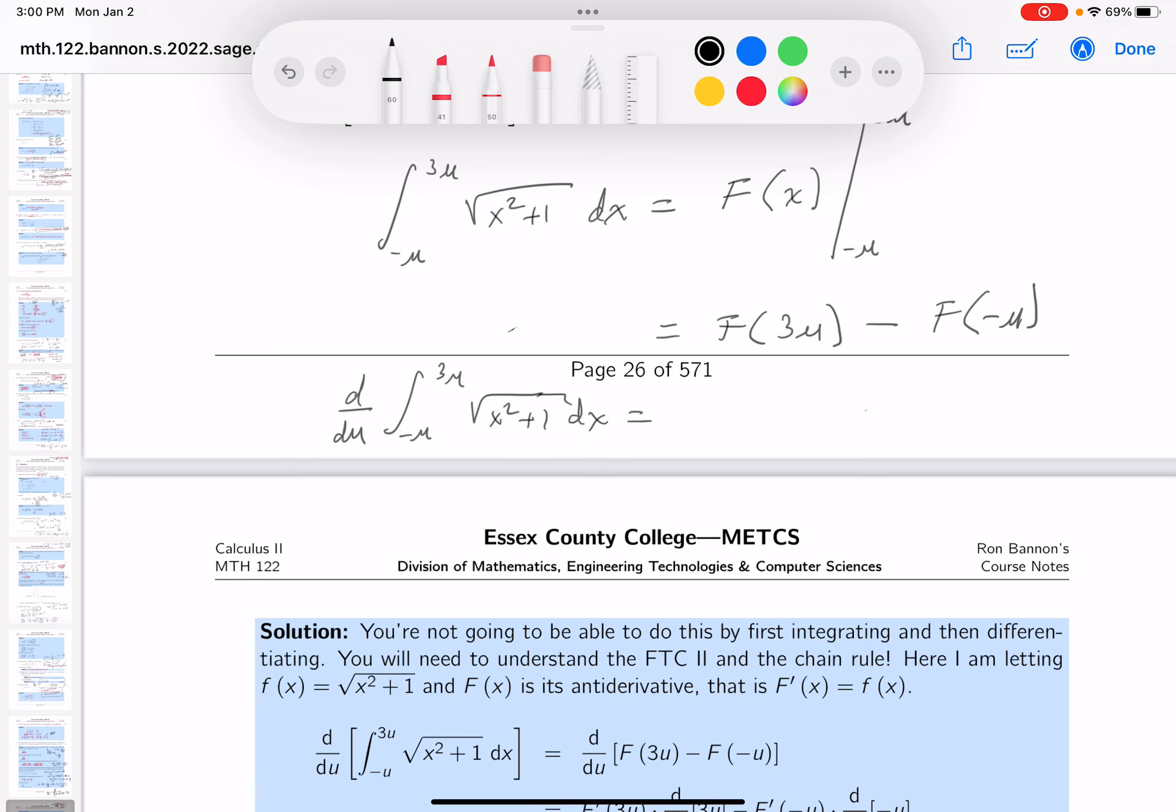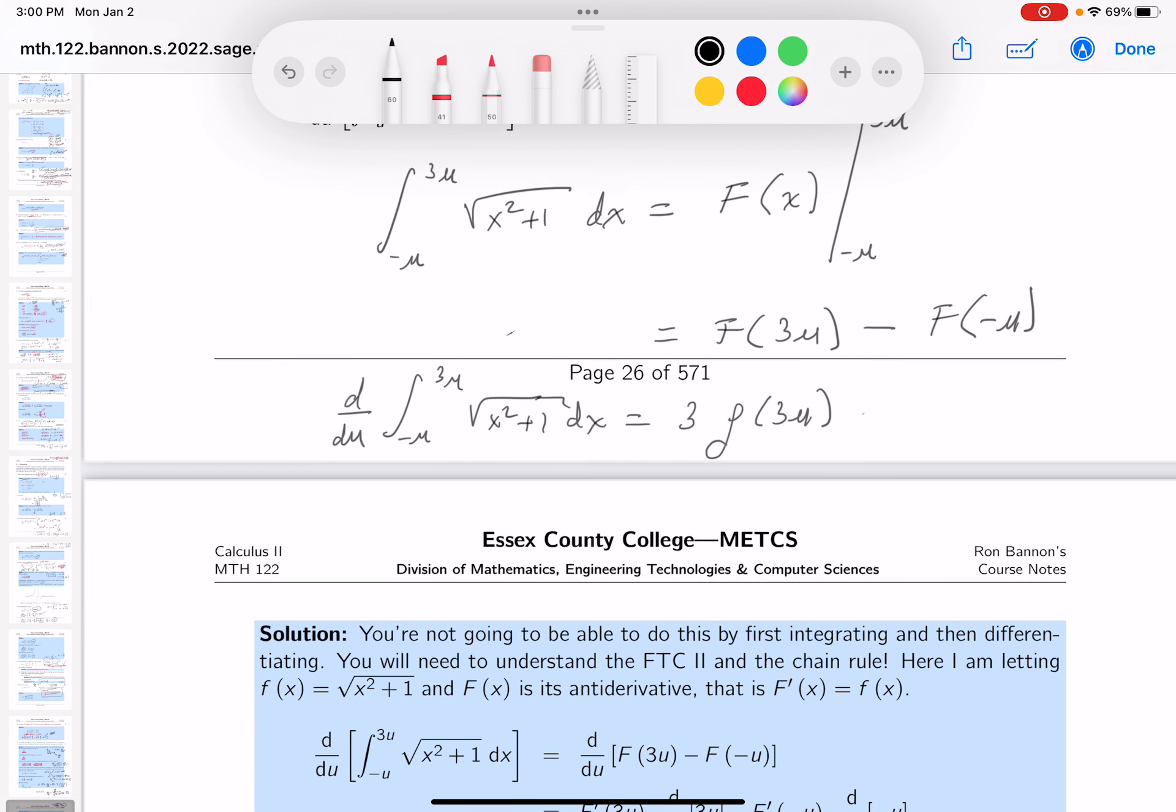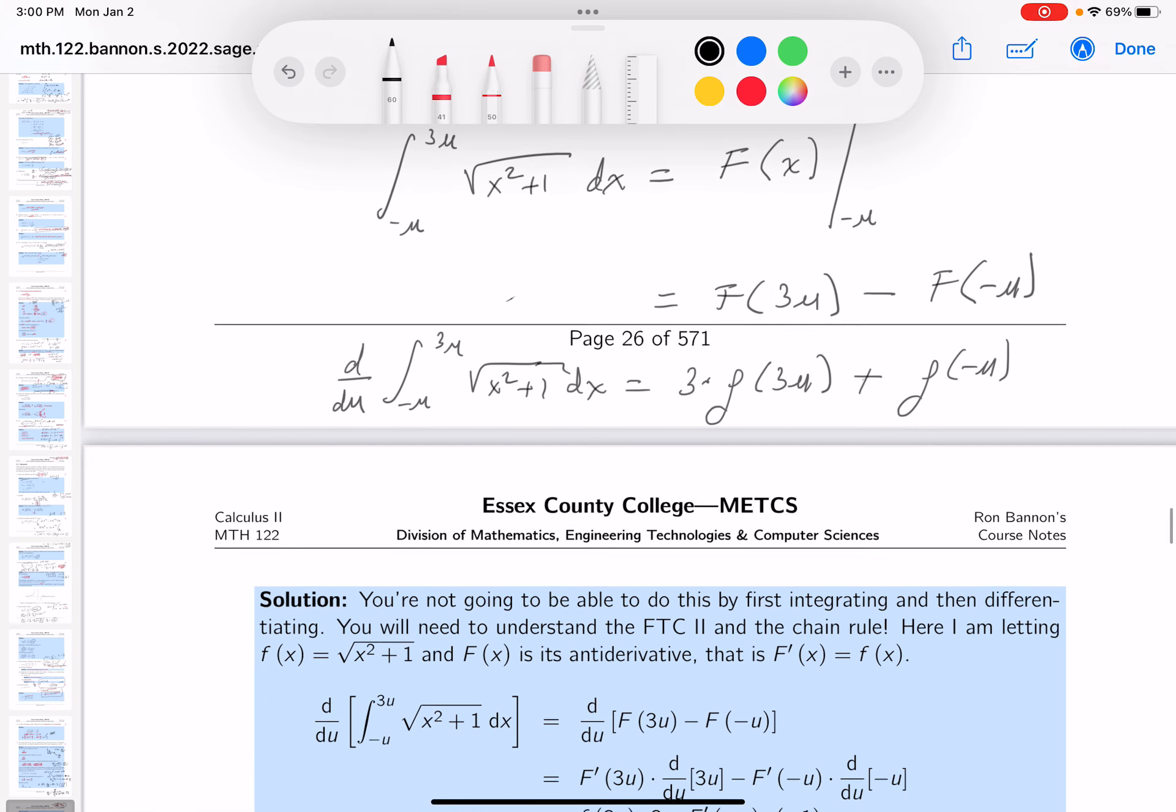And what are you basically doing? You're differentiating the right hand side, which would give you the lowercase f, which we know what that is. 3u times the inside, which is just 3, minus lowercase f of minus u, and you differentiate the inside. That's going to be minus 1, so plus 1 over here.